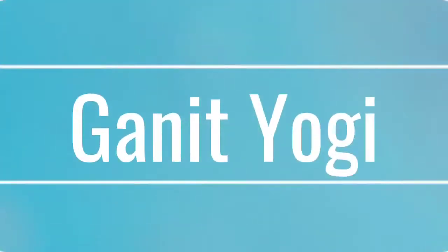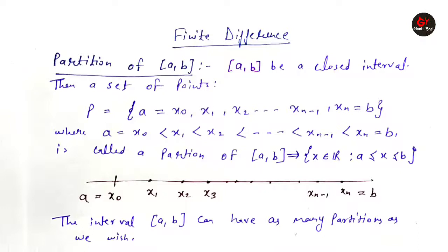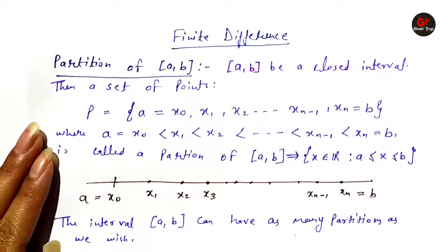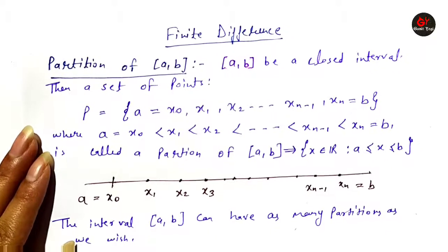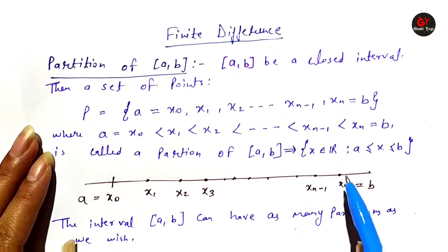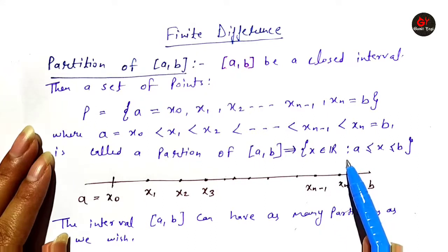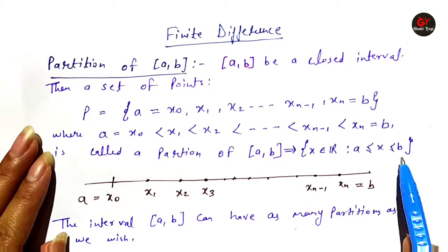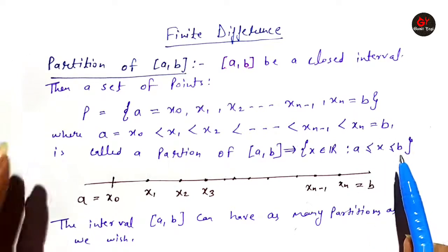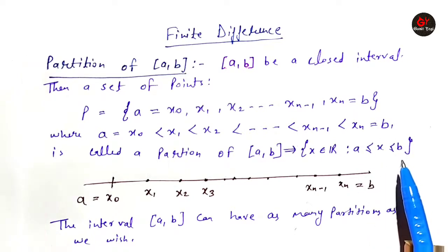In this video, I will give you some basic definitions which are necessary to begin with finite difference. First of all, partition of closed interval A-B. Closed interval A-B means X belongs to real number such that X lies between A and B, and here A and B are also included.